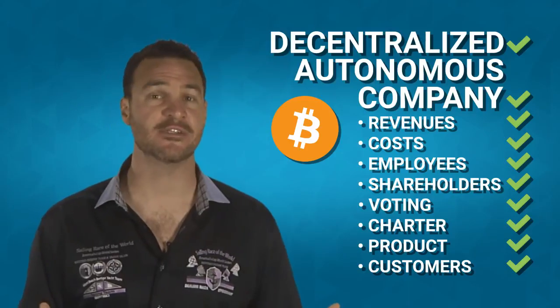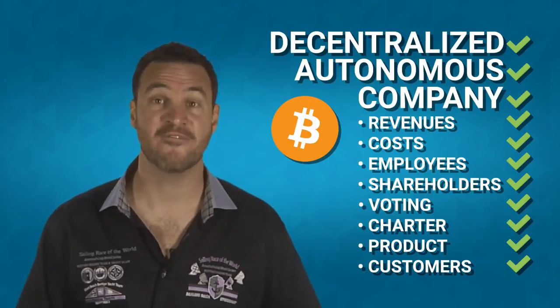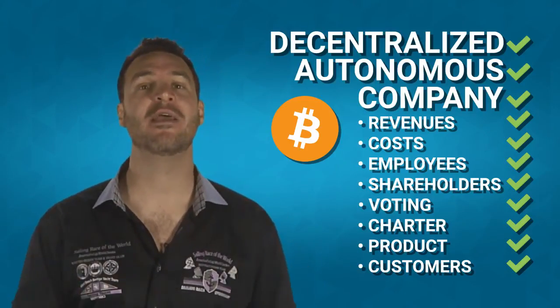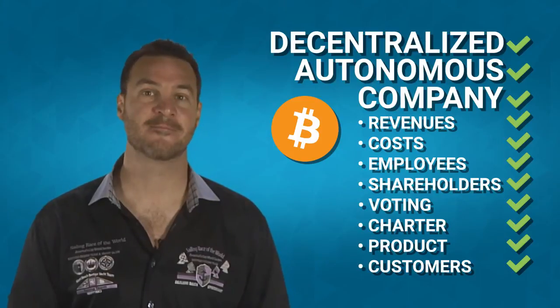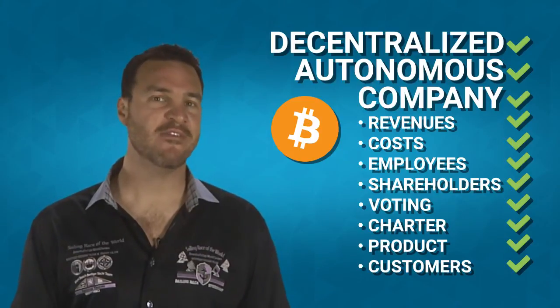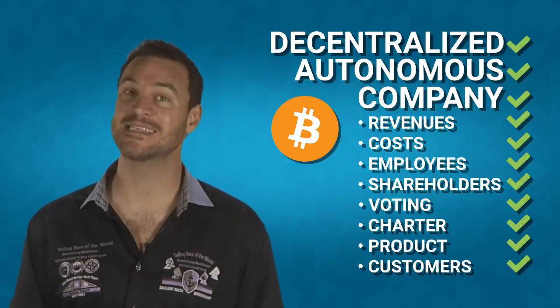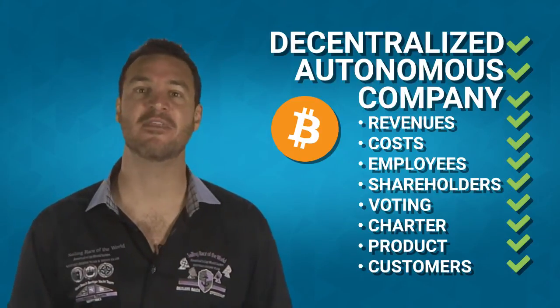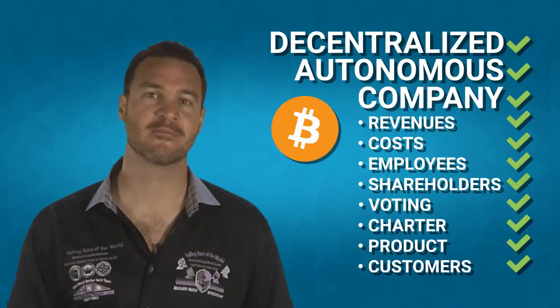Bitcoin is also decentralized and autonomous, and therefore Bitcoin is the world's first DAC. You now have a definition of a DAC, as well as an example of a DAC that you are probably already familiar with.